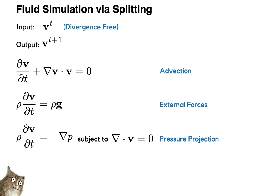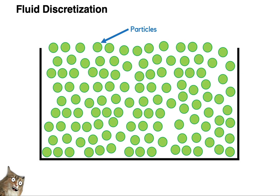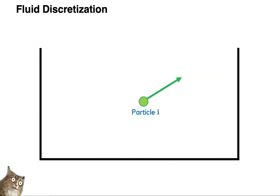For deforming solids, our discretizations were tetrahedral or triangular meshes. While we could use these for fluid simulation, they would quickly become tangled due to the complicated flow of the fluid, and maintaining nice meshes would become very difficult. So instead we will represent our fluid using a set of disconnected particles. Each particle stores all the information we need about the fluid at that point in space, including its position and velocity.